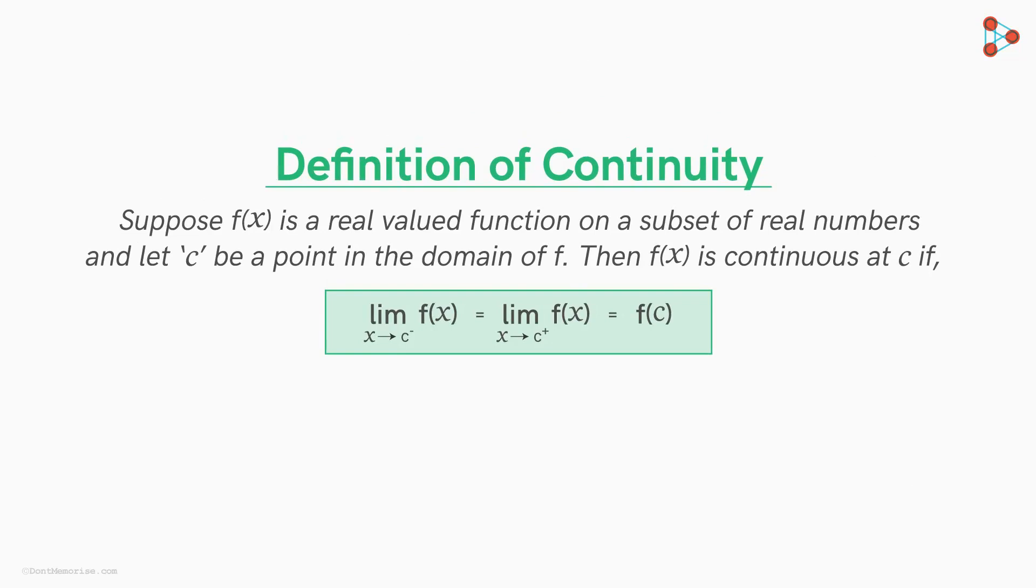So all in all, if a function is continuous at c, both its left hand limit and the right hand limit at c will always be equal to the value of the function at c. This implies that the normal limit, limit of f of x as x approaches c is equal to f of c. And that is the most bookish definition of continuity.